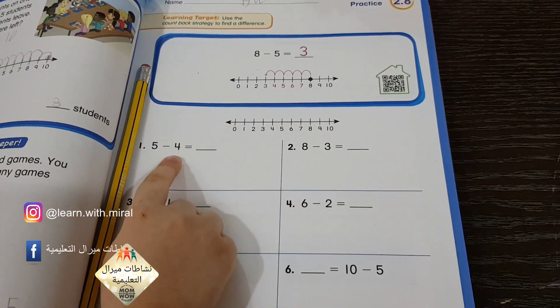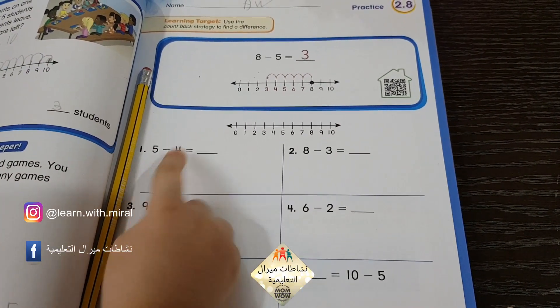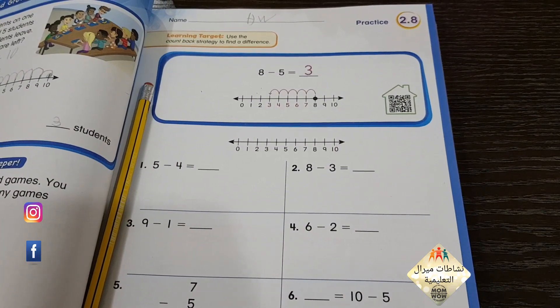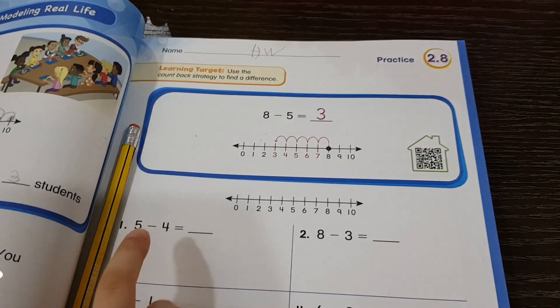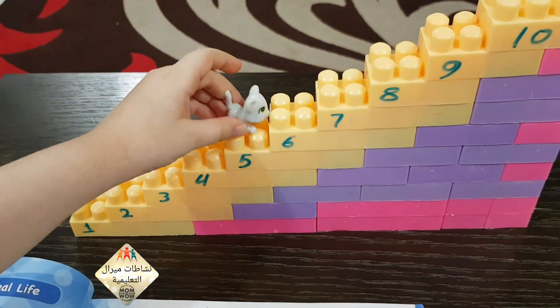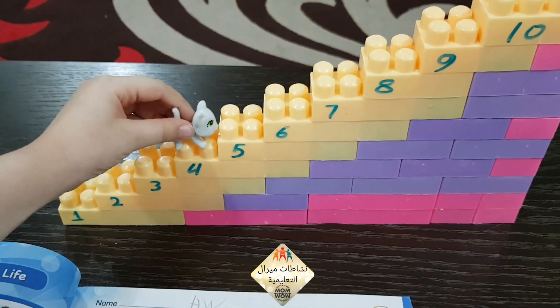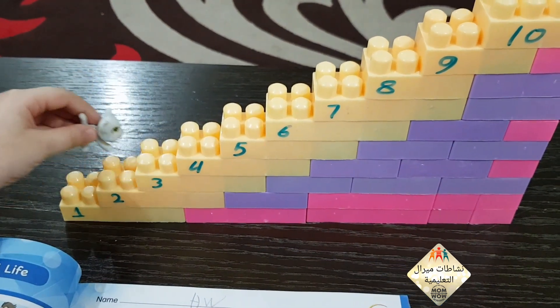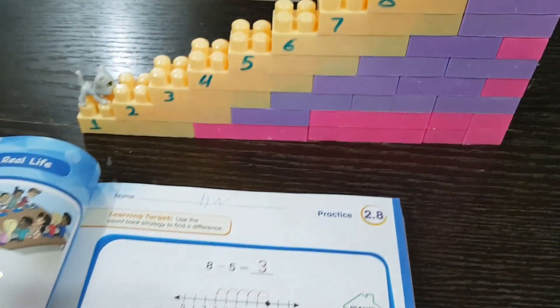5 minus 4. Minus means count back. Now 5 minus 4: 1, 2, 3, 4. The answer will be 1.